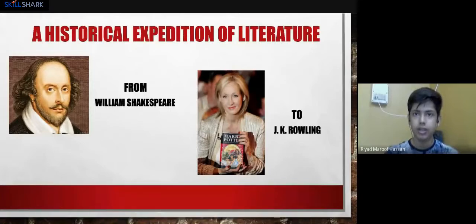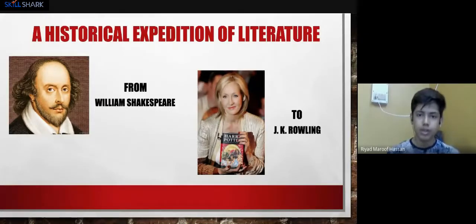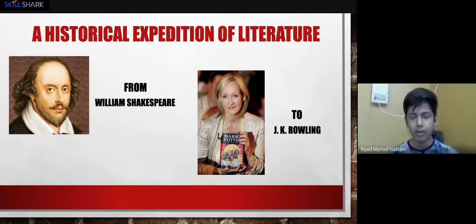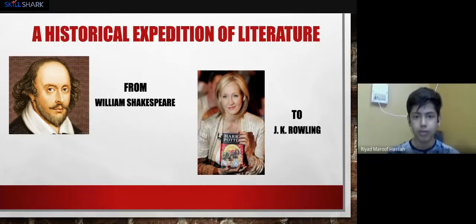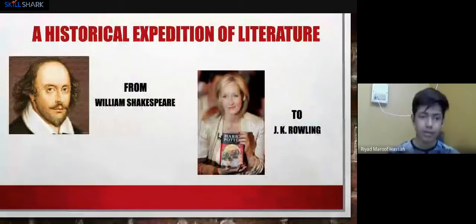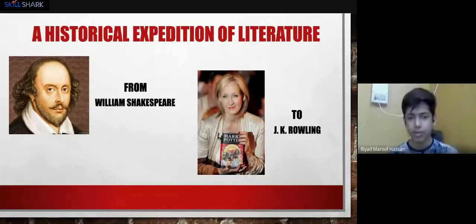You can see the change — an evolution of the style of literary writing and change in publication designs. Those old yellow scripts have now turned into beautifully designed books like J.K. Rowling's. From scripts to ebooks, from cuneiform tablets to digital devices you can carry in your pocket and read on your phone. The evolution of literary writing goes from William Shakespeare to the present moment with J.K. Rowling.